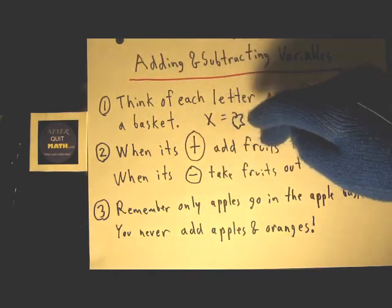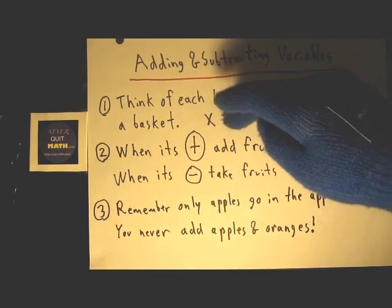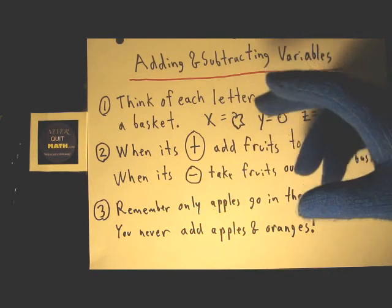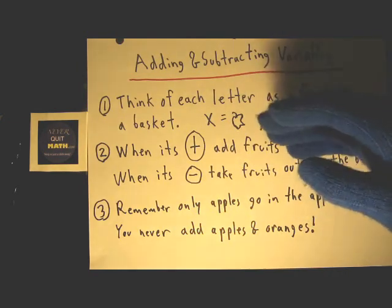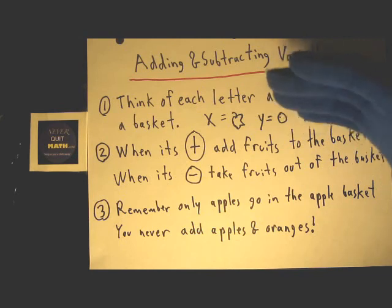When it's addition, a plus sign, you just add fruits to the basket. For example, if I had 4 apples and they say plus 5 apples, then I'm just adding more apples to the basket. So 4 apples plus 5 apples equals 9 apples.